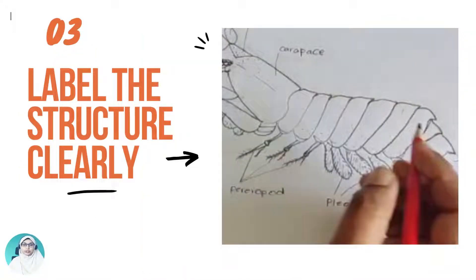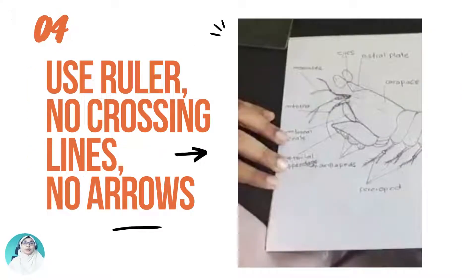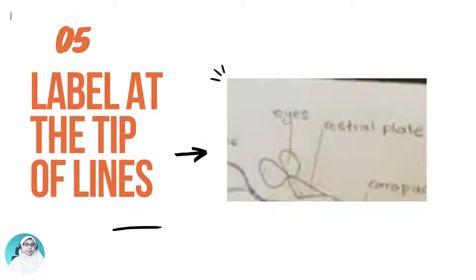Label the structure clearly. Avoid cursive writing. Use a ruler to ensure straight lines for labeling. The label lines should not cross one another. Arrows at the tip of the label are not encouraged. Naming should be at the tip of the label line, not on top of it.